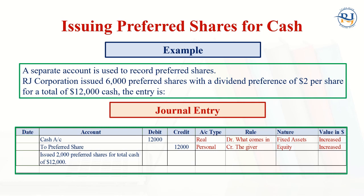Issuing preferred shares for cash: a separate account is used to record preferred shares. RJ Corporation issues 6,000 preferred shares with a dividend preference of $2 per share, totaling $12,000 cash. The journal entry is: debit Cash, credit Preferred Share. Cash has increased for the company and the preferred share capital has also increased, so assets are debited and equity is credited.